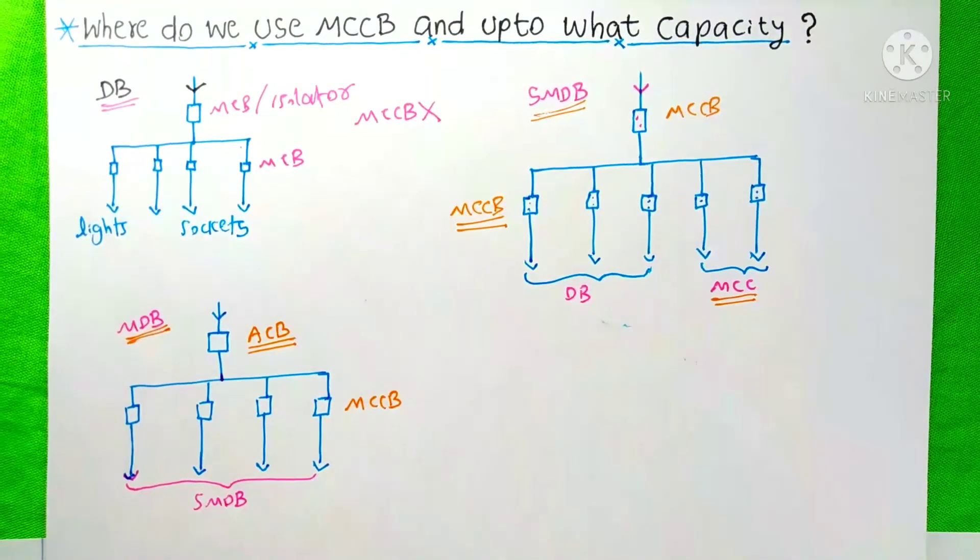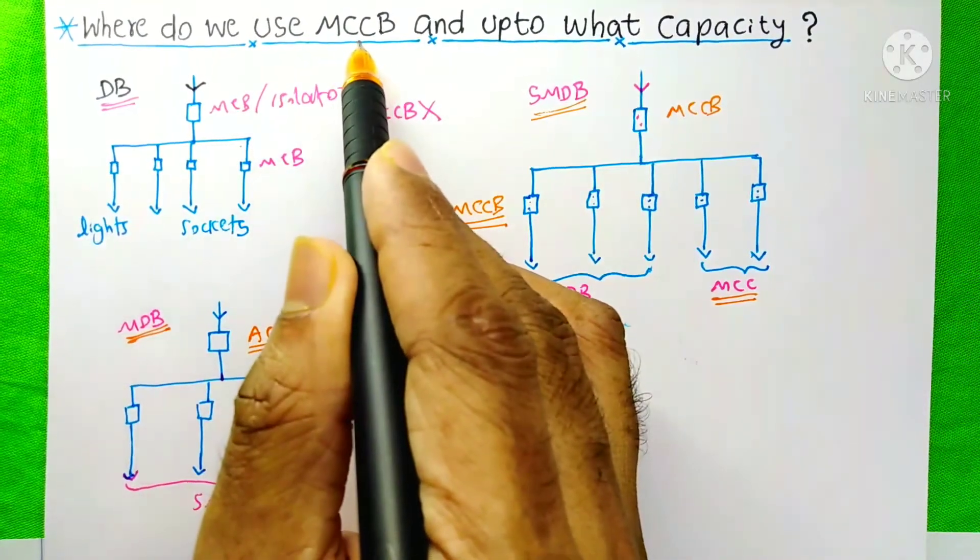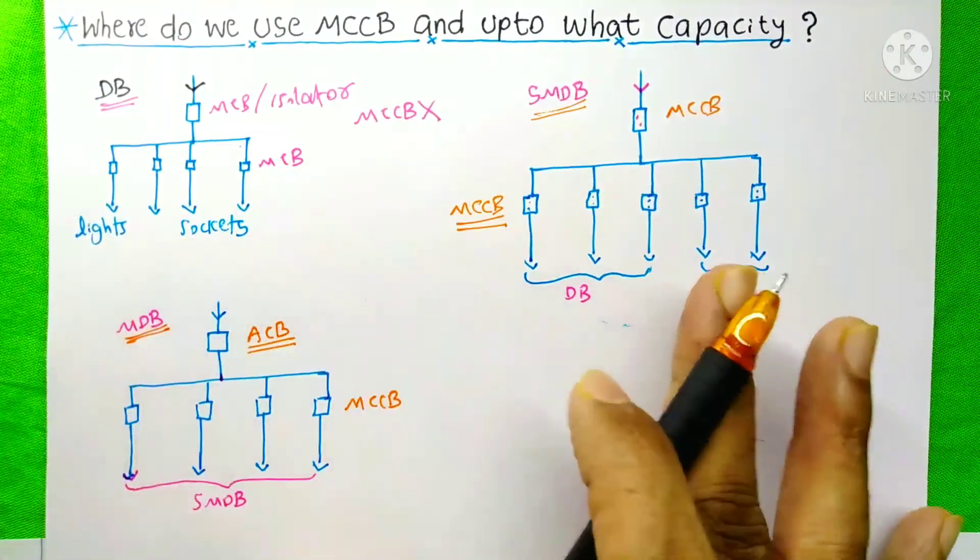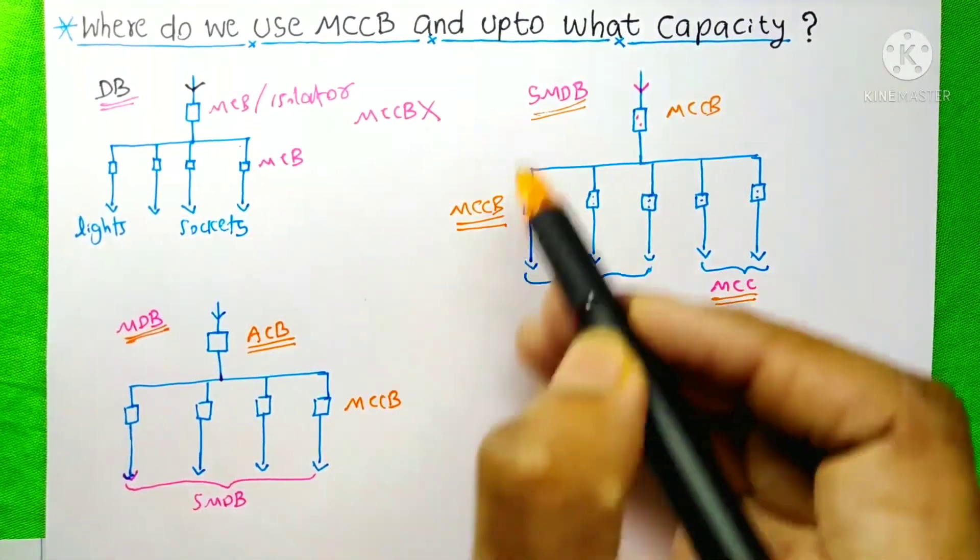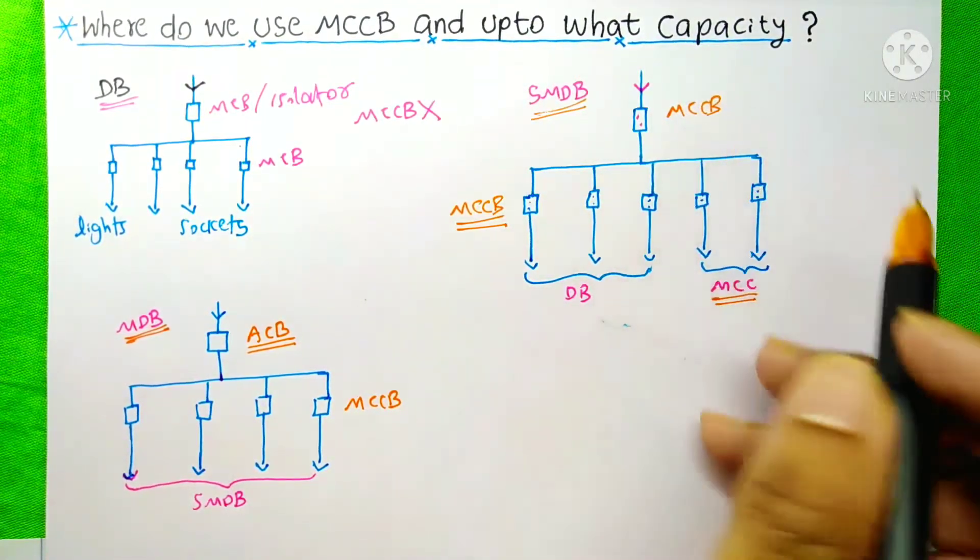So, I hope you understood about the question, where do we use MCCB? Generally we use this method. And the next question is, up to what capacity we use MCCB generally.